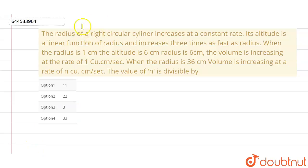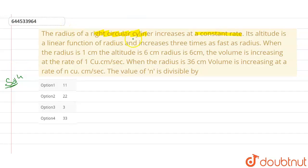The given question here is: the radius of a right circular cylinder increases at a constant rate. So if I write down here, dr/dt is the rate at which the radius is increasing at a constant rate, which is let's suppose k, my constant.